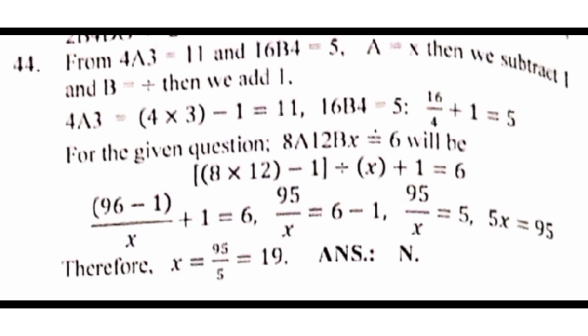So, we're going to look at it. It says, from 4a3 is equal to 11, 16b4 is equal to 5, a is equal to, then we'll subtract 1 from it, and b is equals to, you divide, then we'll add 1 to it. B is division. So, a is multiplication. Then, we'll add 1 to it.